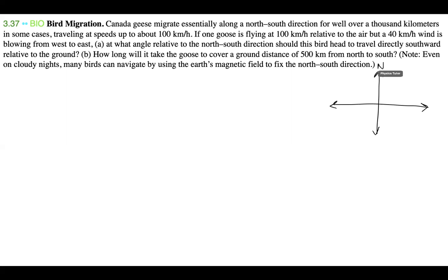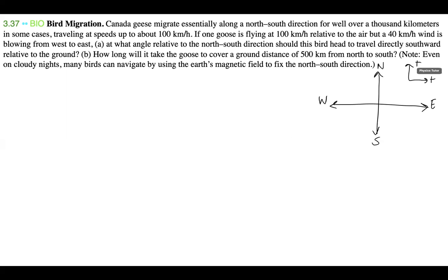So this is north, this is east, this is south, and this is west. I'm going to establish what's positive and what's negative. This sign means that north and east are positive, and consequentially west and south are negative, because they're just the opposite of north and east.